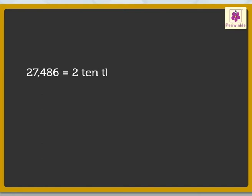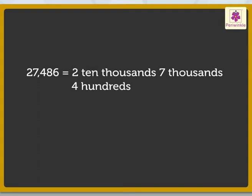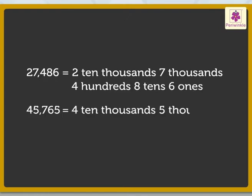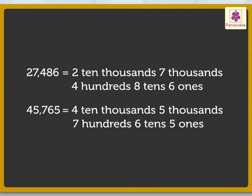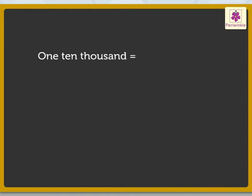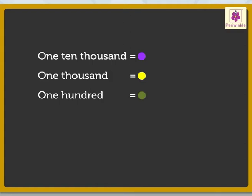So there are 2 ten thousands, 7 thousands, 4 hundreds, 8 tens and 6 ones strawberry, and 4 ten thousands, 5 thousands, 7 hundreds, 6 tens and 5 ones vanilla ice cream cups. Let us represent each ten thousand with a purple dot, each thousand with a yellow dot, each hundred with a green dot, each ten with a red dot, and each one with a blue dot.